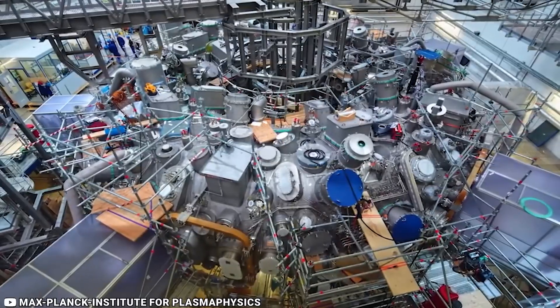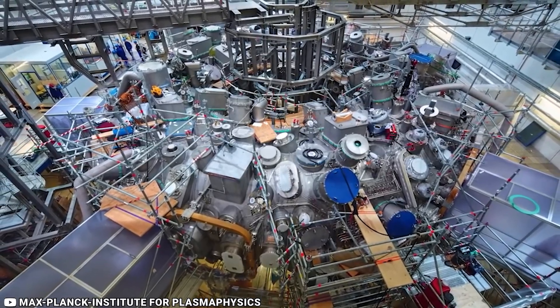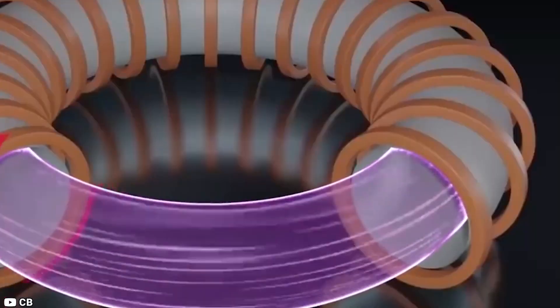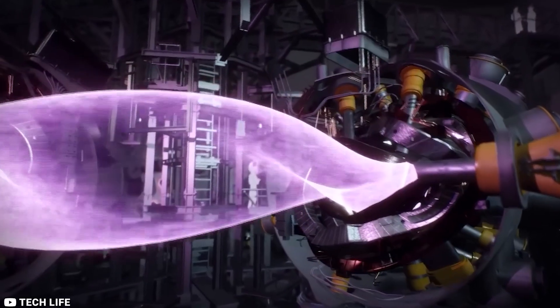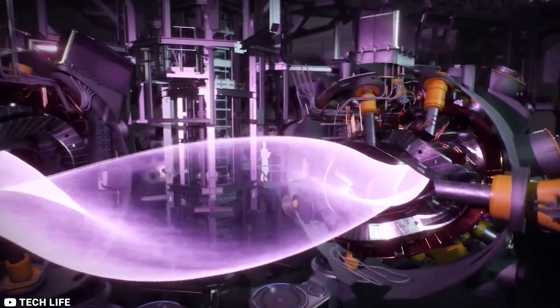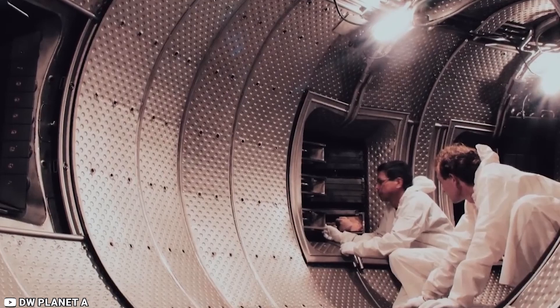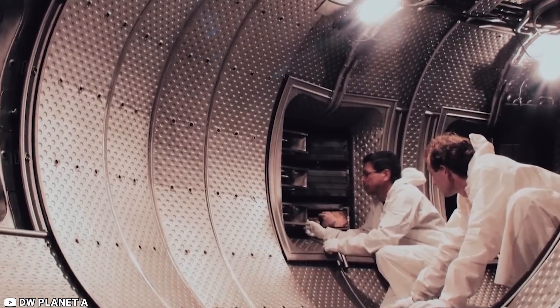Wendelstein 7X has 50 3.5-meter tall superconducting niobium-titanium magnet coils. Once turned on, IPPs hardly utilize any energy. Optimizing their forms created a thermally insulating, stable magnetic cage for the plasma.